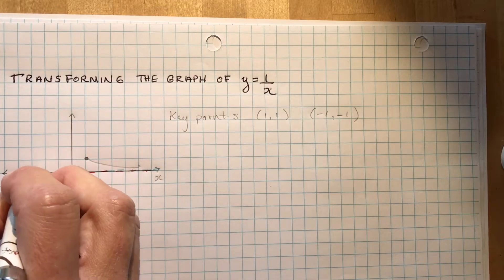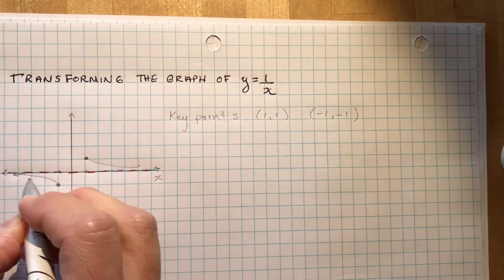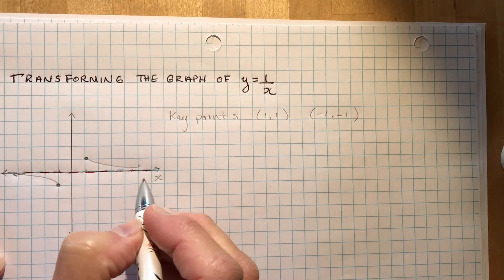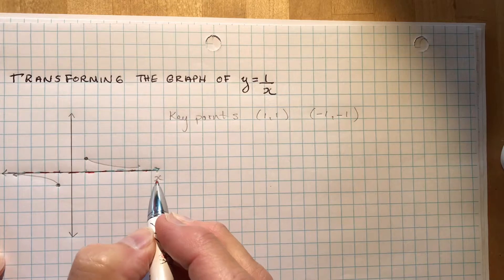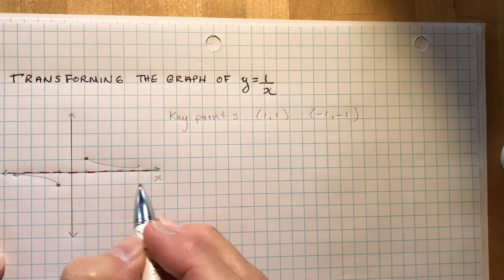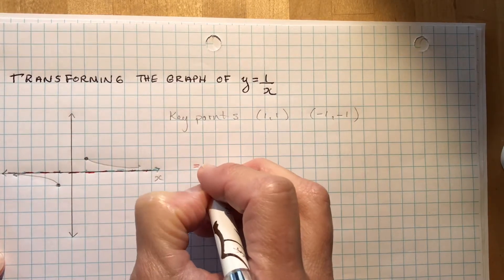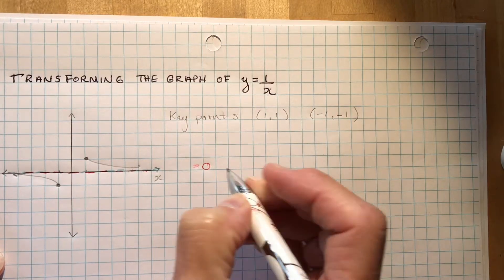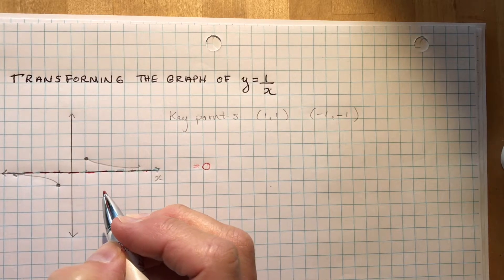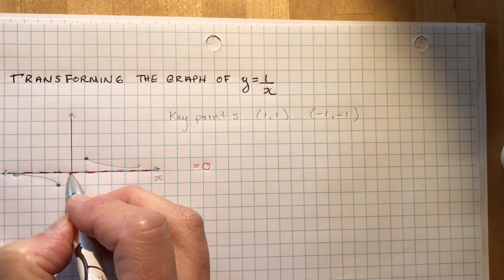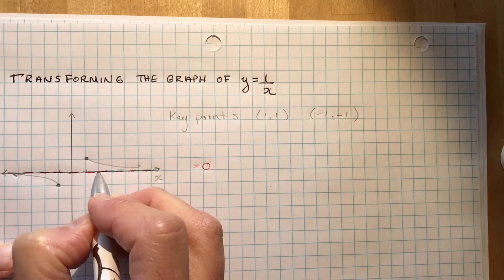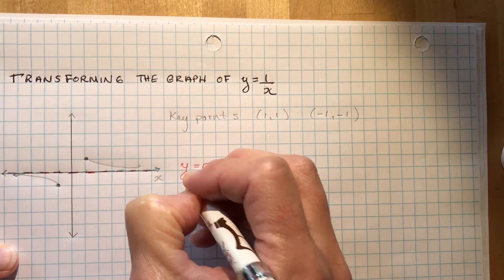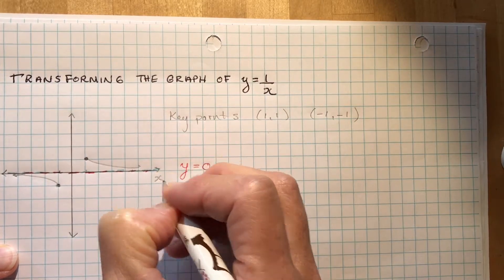What's the equation of this asymptote — the x-axis? Well, it's something equals 0. Is it x equals 0 or y equals 0? Each of these points — (0,0), (1,0), (2,0), (3,0) — all the y's are 0. So that means y equals 0 is the equation of the x-axis asymptote.